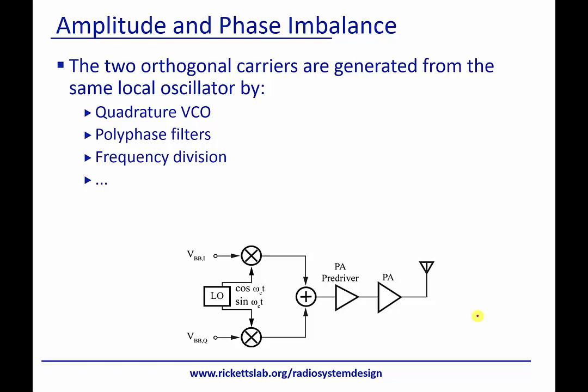Another thing that happens is amplitude and phase imbalance. We talk about this local oscillator and these two orthogonal signals. The way they're generated is through quite a few different means. One is a quadrature VCO, where VCO is a voltage controlled oscillator.